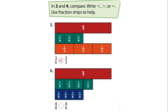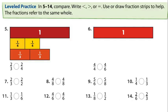Question 4: is 4 over 8 less or greater than 4 over 6? Again, what is our rule? The fraction with the smaller denominator is the greater fraction. 4 over 6 is the greater fraction, so 4 over 8 is less than 4 over 6.